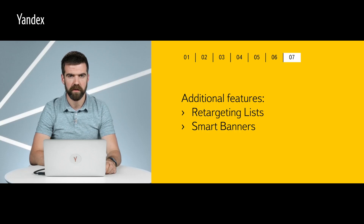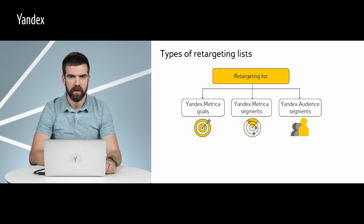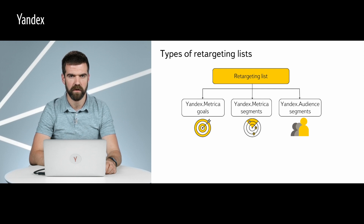We've got one last section about additional features in the Yandex Advertising Network, notably retargeting lists and smart banners. Retargeting lists make it possible for you to show ads in the Yandex Advertising Network to a pre-selected audience, or to users who previously visited your site and completed certain actions. They can be based on goals in Yandex Metrica — for example, you show ads to users who added an item to the cart but didn't place an order.